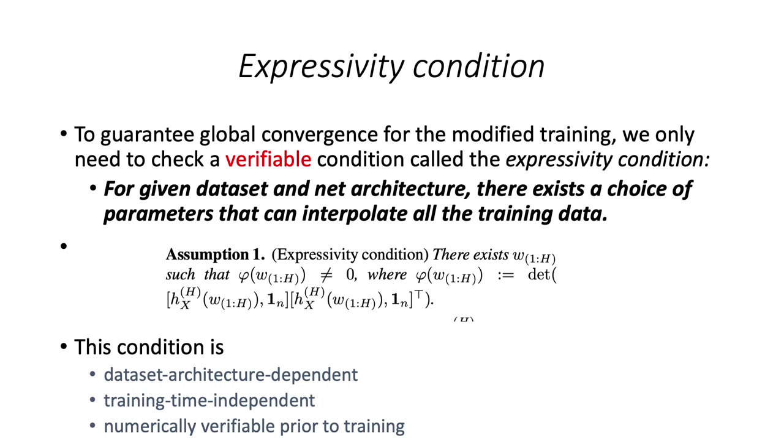We're calling this the expressivity condition to guarantee global convergence for our proposed modification of the training. We can do a check of this condition before the training starts by taking a given dataset and choosing a network architecture.